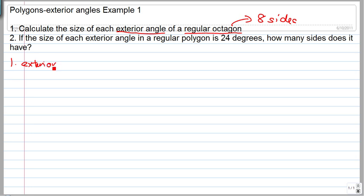The exterior angle equals 360 divided by n, where n is the number of sides. Since there are eight sides, take 360 divided by 8 to get 45 degrees.